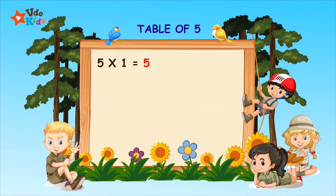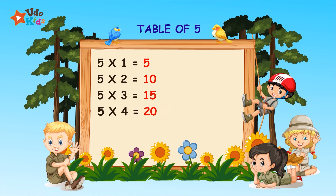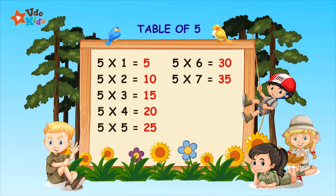5 1s are 5. 5 2s are 10. 5 3s are 15. 5 4s are 20. 5 5s are 25. 5 6s are 30. 5 7s are 35.